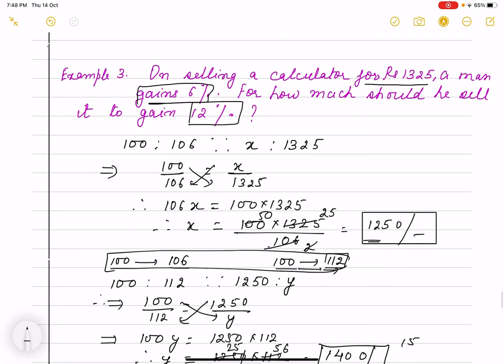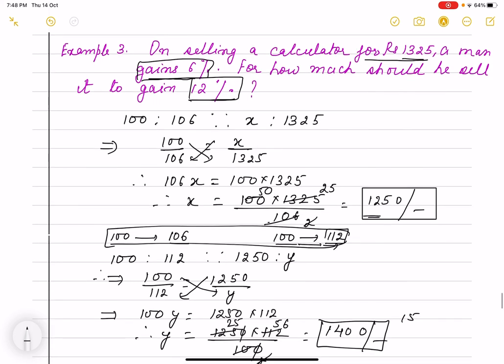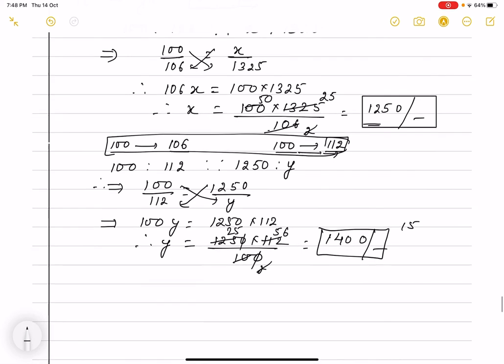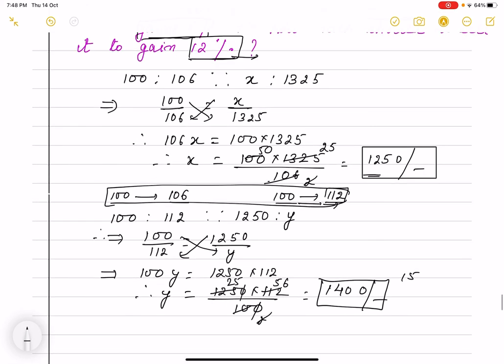So this will be, this is one thing. If I have 6% profit, then it is 1325. But if I have 12% profit, then my selling price will be more than 1400. So this way we will solve it.